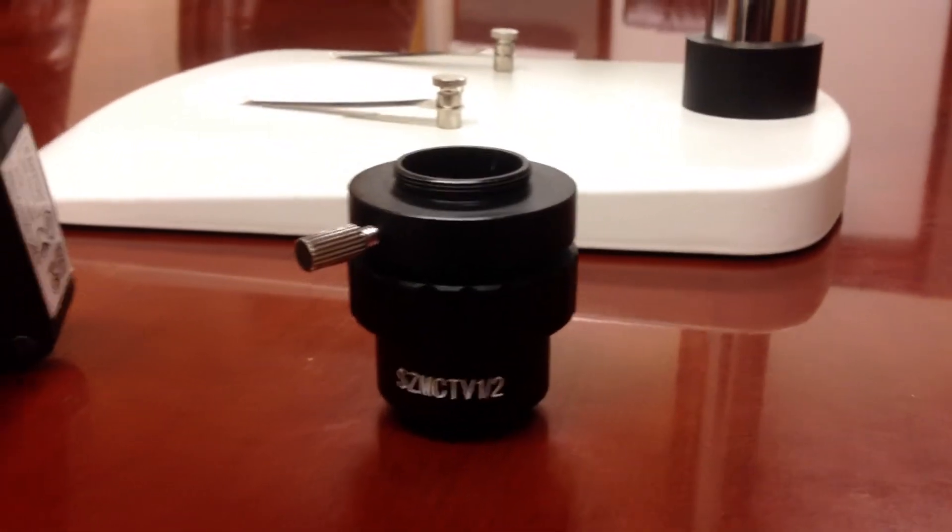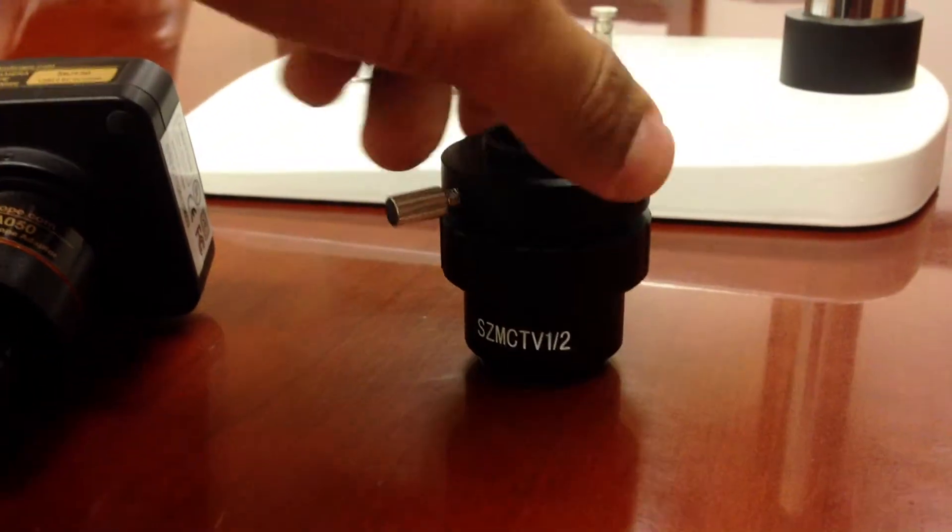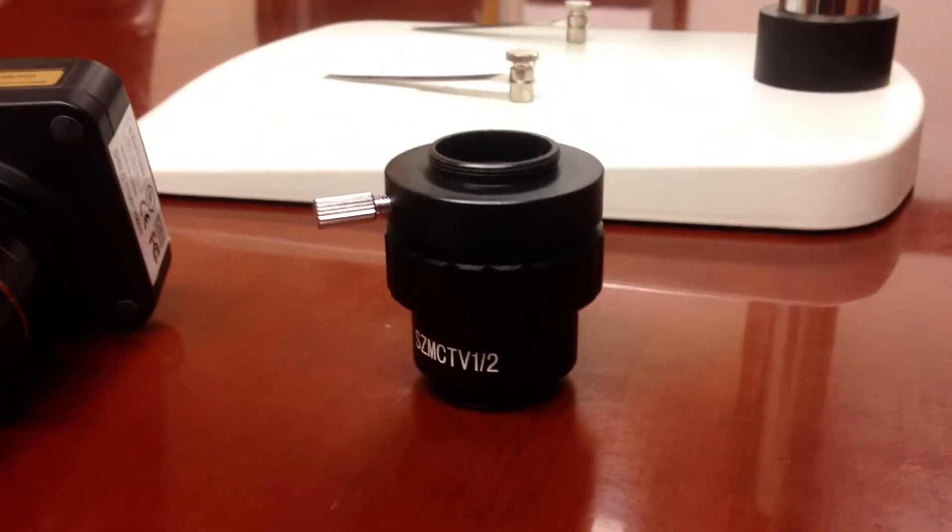Now we also sell a part that we call the AD-C20, which is also a reduction lens, but it's of a different type. And sometimes it gives you a better field of view when using our MU series camera.